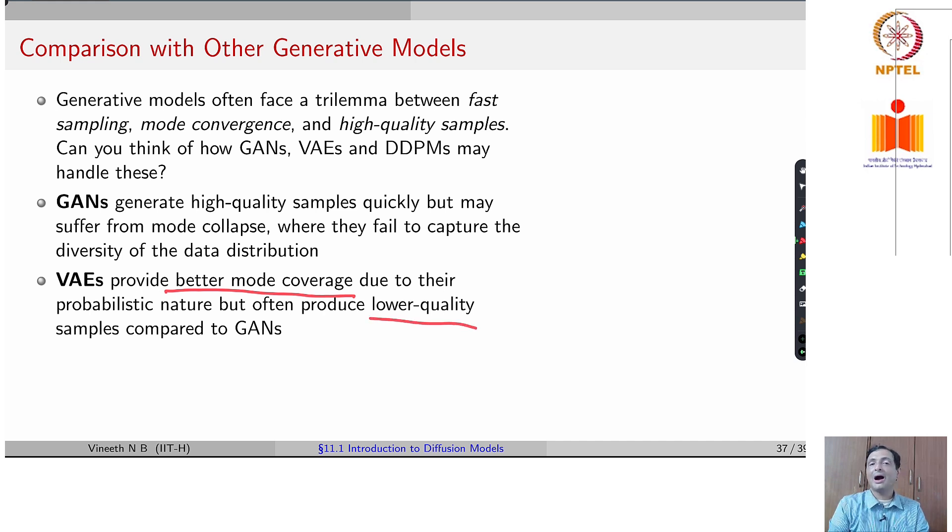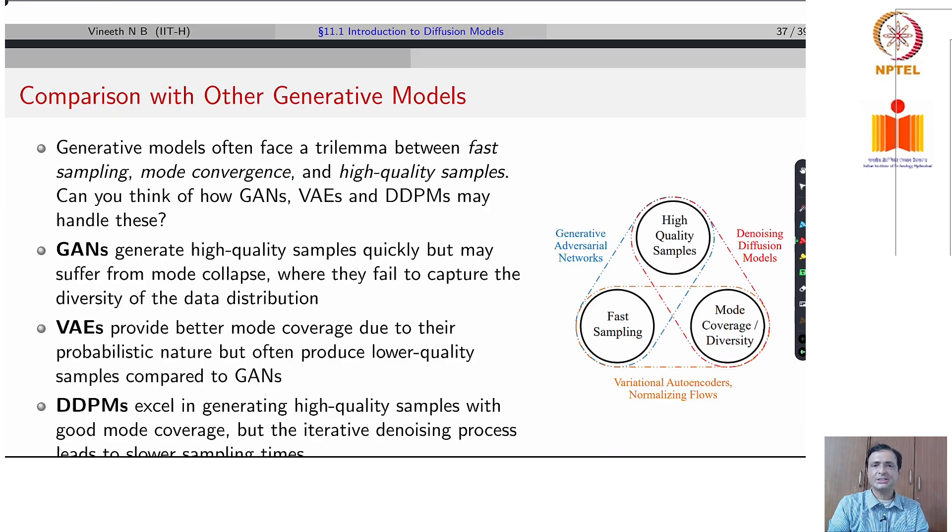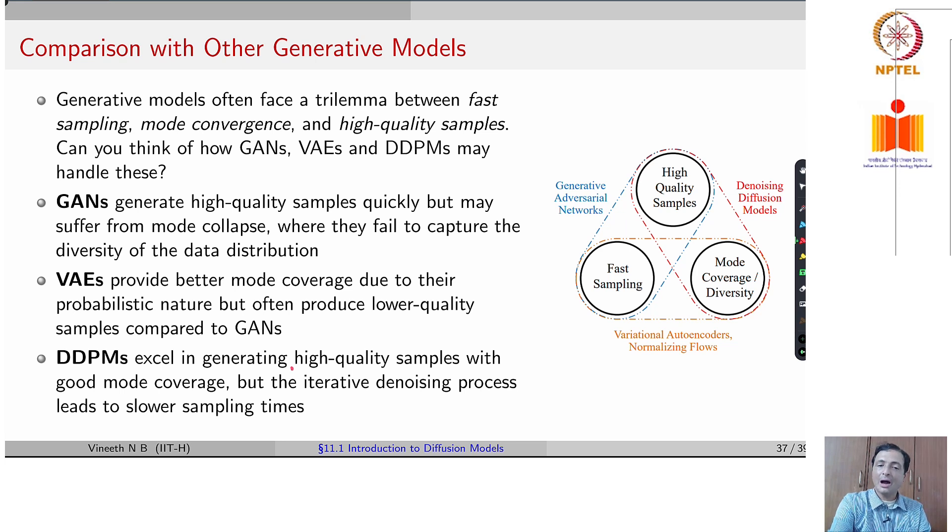DDPMs provide high quality samples with good mode coverage, but their denoising process is inherently slow. So you could say that DDPMs and diffusion processes have high quality samples and mode coverage. GANs have high quality samples and fast sampling. Variational autoencoders have fast sampling and mode coverage, but do not have high quality samples. So each one of them have their own limitations as part of the bargain.